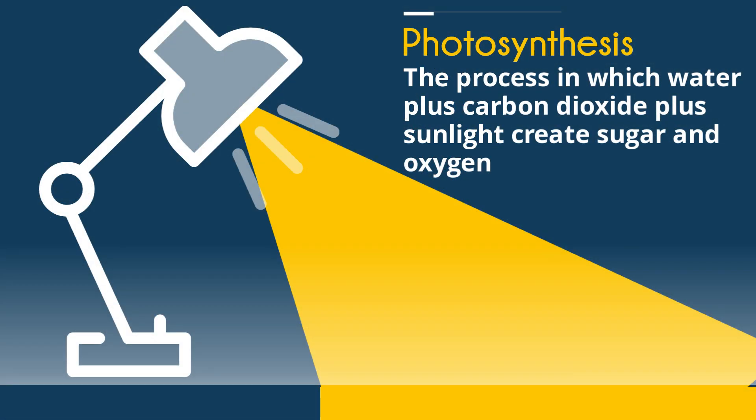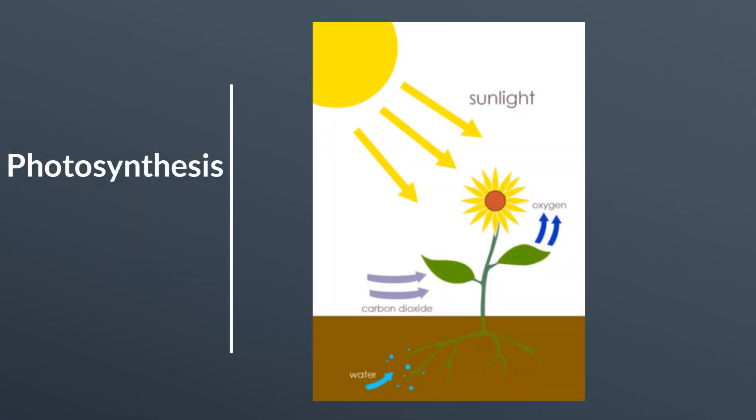Photosynthesis is the process in which water plus carbon dioxide plus sunlight creates sugar and oxygen. And here is a picture of photosynthesis. You can see sunlight, you can see the carbon dioxide going in and the oxygen going out, and the plant absorbing water.